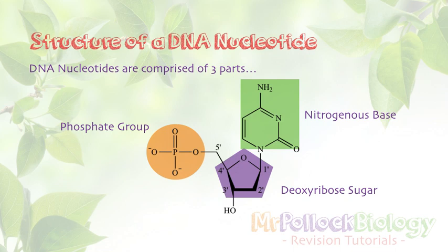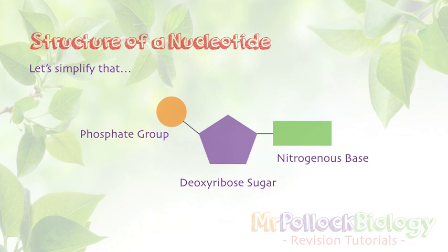That whole chemical formula is far too complicated for us, so we're going to simplify it right down. This is what we look at as a nucleotide: three simple shapes representing the three different parts — the phosphate, the deoxyribose sugar, and the nitrogenous base. That's a mononucleotide, but how do they undergo a reaction that forms the polynucleotide — the large polymer — which will be DNA?